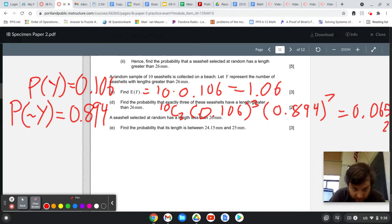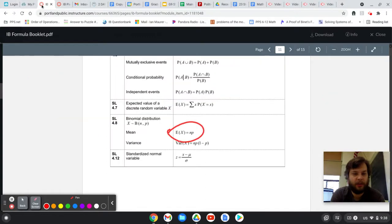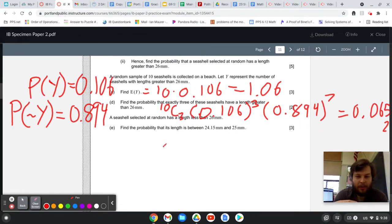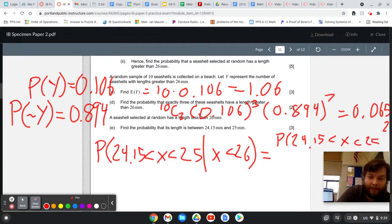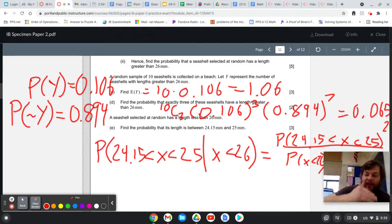And then the last part of this question, a seashell selected at random has a length less than 26 millimeters. So they're telling us information. Whenever you get told extra information, you should be thinking of conditional probability. So conditional probability is right up here. So we do probability of A intersection B divided by probability of B. So we know that the probability that it has a length less than 26. So what are we saying? We're trying to find the probability that it's between 24.15 and 25 given that it is less than 26.